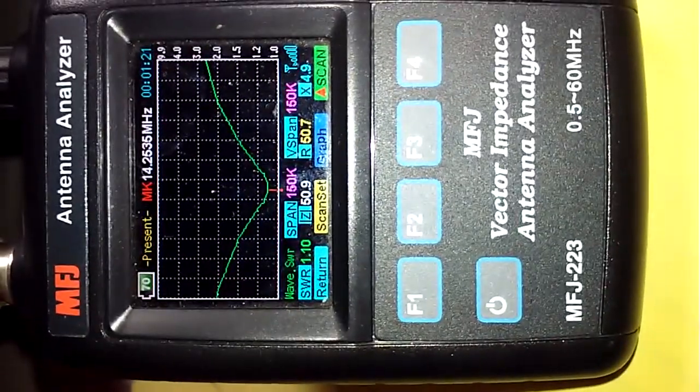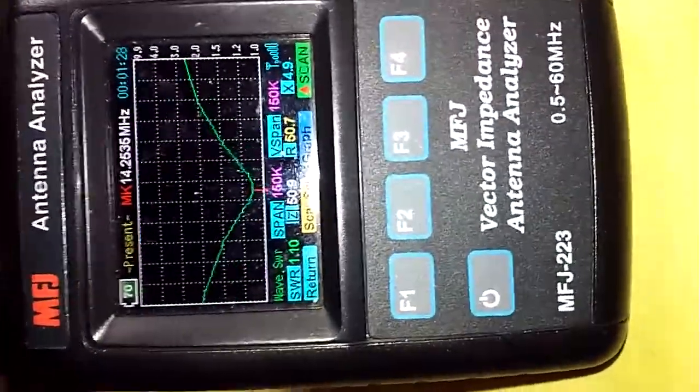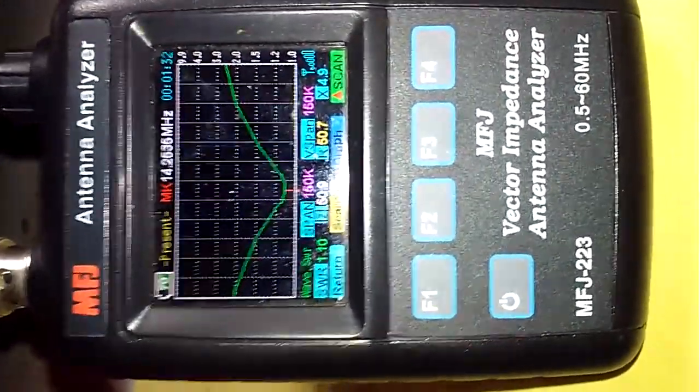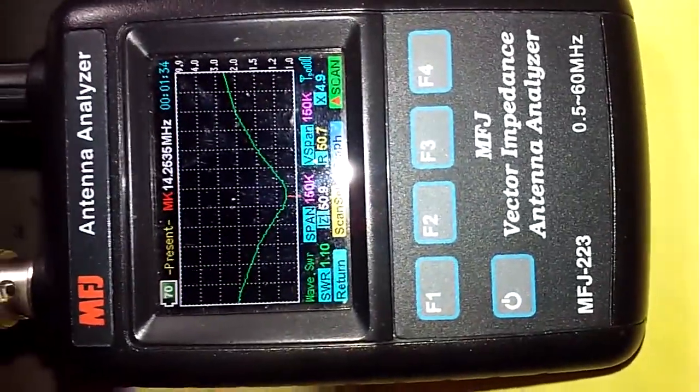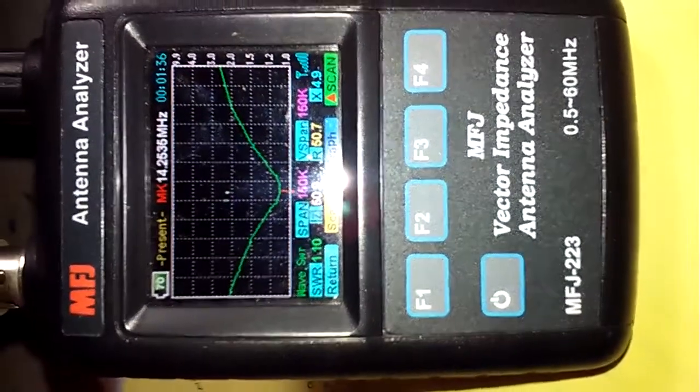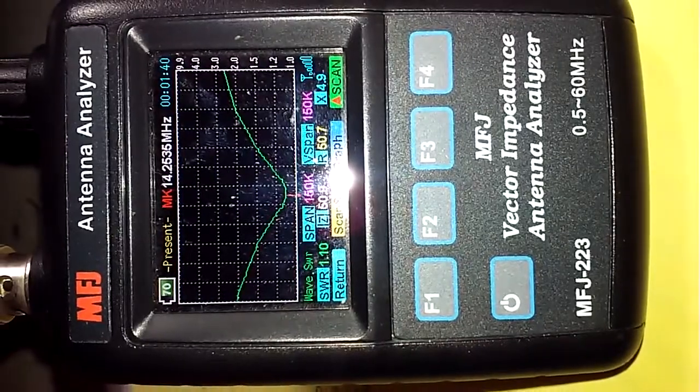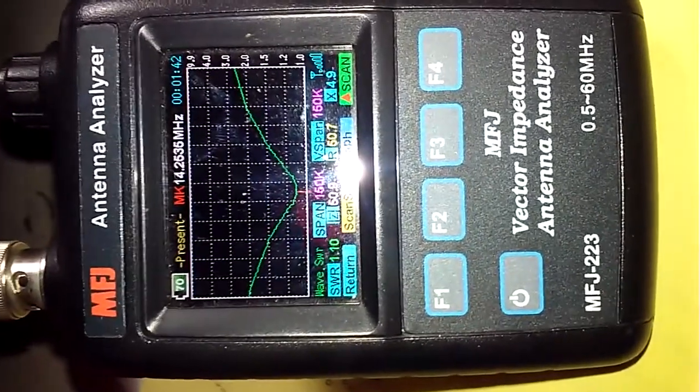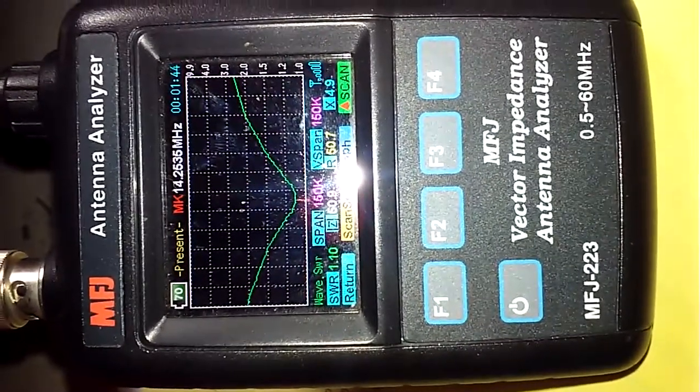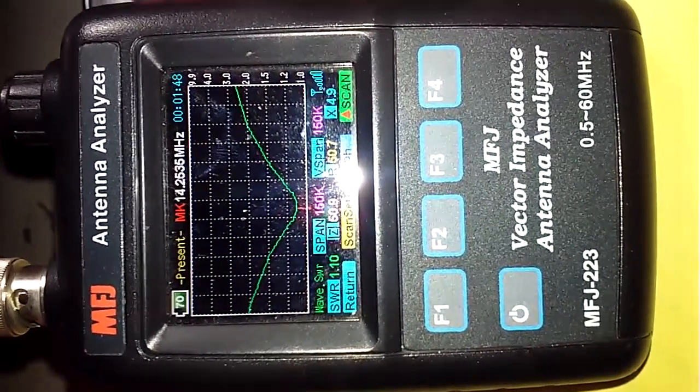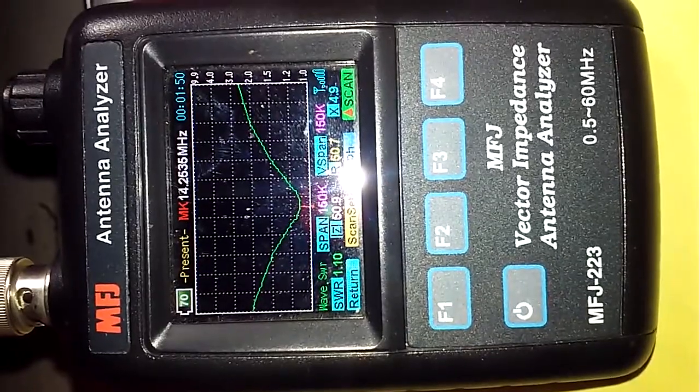Here we are inside now checking the coax as it comes into the shack, and the cable adds a little bit of variance to the tuning but it's still very acceptable. 1.1 at 14.2635 and 50 ohms impedance, 50 ohms resistance and 4.9 ohms of reactance.